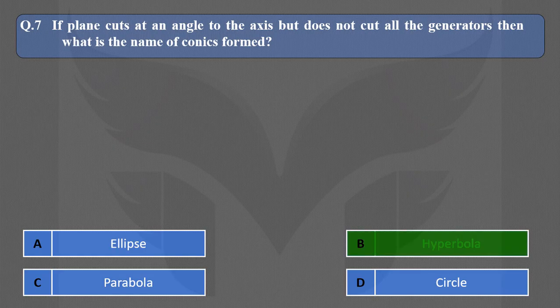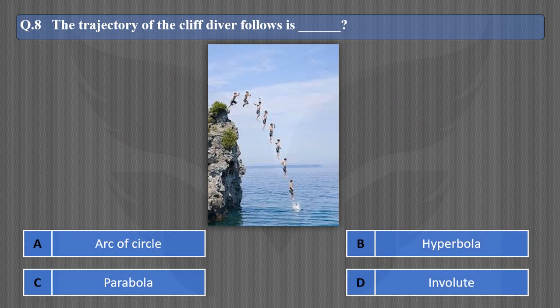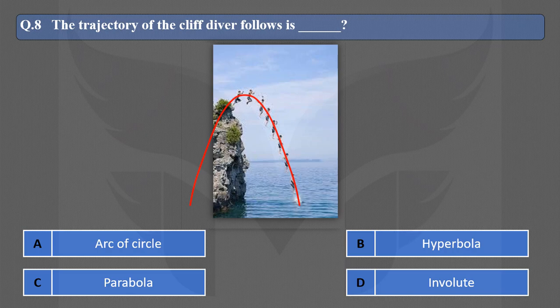Next question: The trajectory that a cliff diver follows is — the path followed by the cliff diver is a part of a parabola. So the correct option is C, parabola.